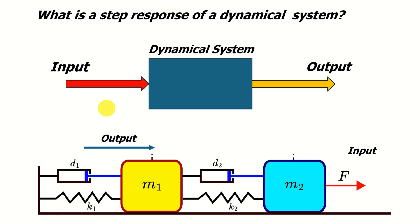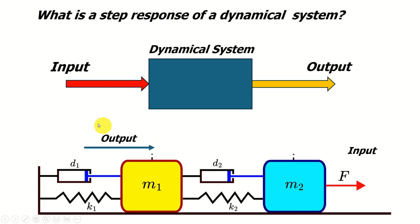What is the step response of a dynamical system? Here is our dynamical system, represented by a block — it can be a physical system or a numerical model in a computer. In this tutorial I will assume this is a real physical system such as a robot, a car, or an airplane. Every system has an input and an output. Let's consider a mass-spring-damper system composed of two masses or boxes connected by a system of dampers.